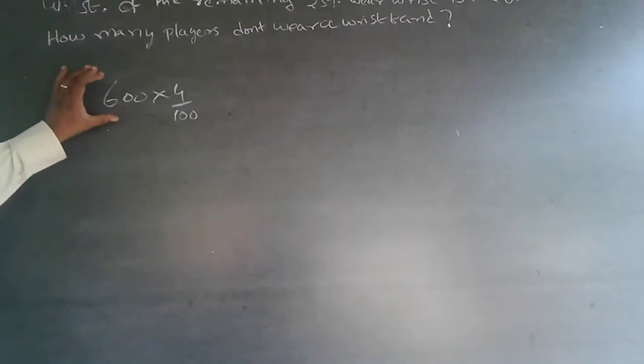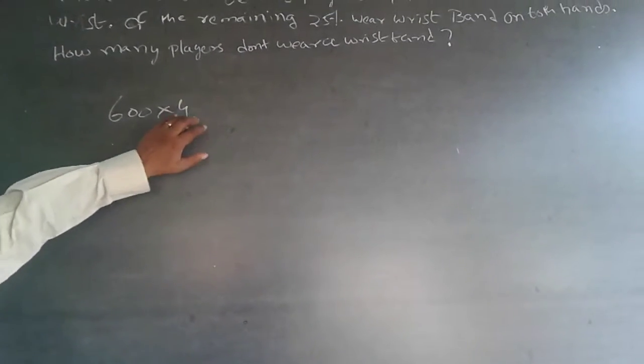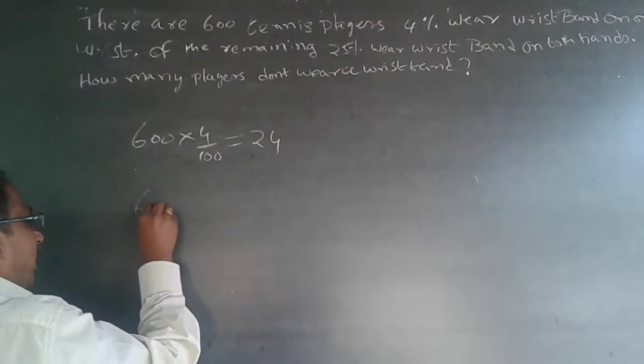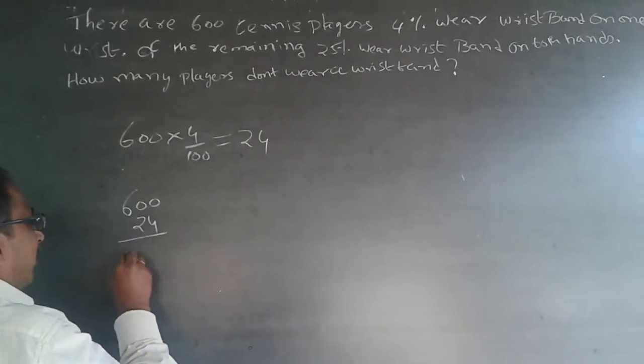So what happens is 600 is number of people, 4% into 4 by 100. So this will be equal to 25. This will be equal to 24. Now 600 minus 24. 600 minus 24 will be 576.